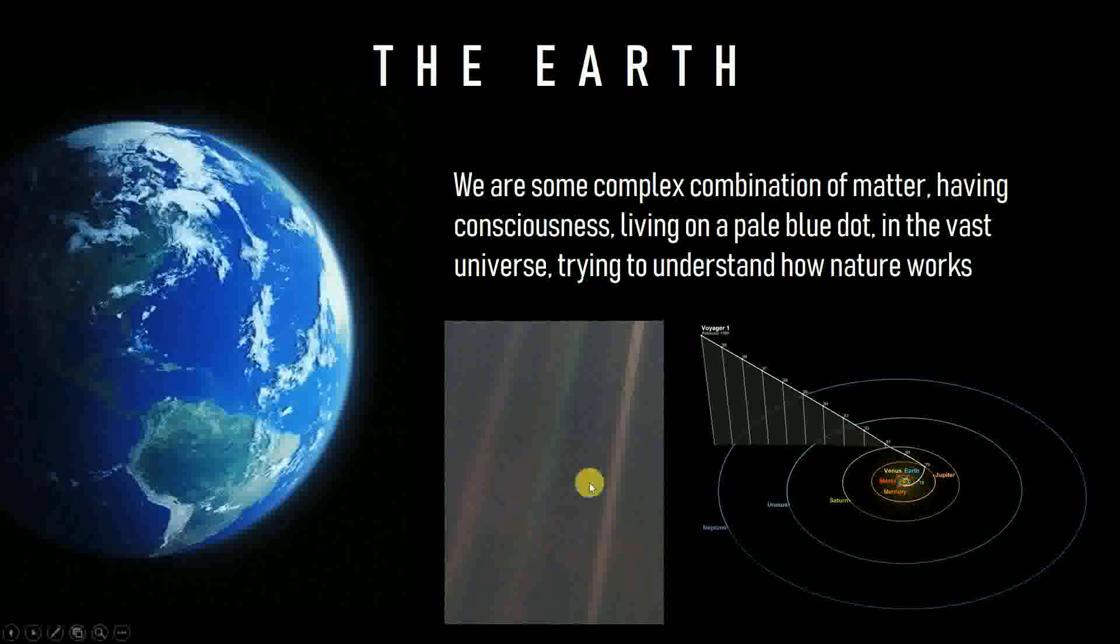Just to feel how small we are, this is a picture taken from Voyager from the edge of our solar system in February 1990. Can you spot Earth in here? This is Earth, the small bluish dot. That's everything that we know of exists around us.